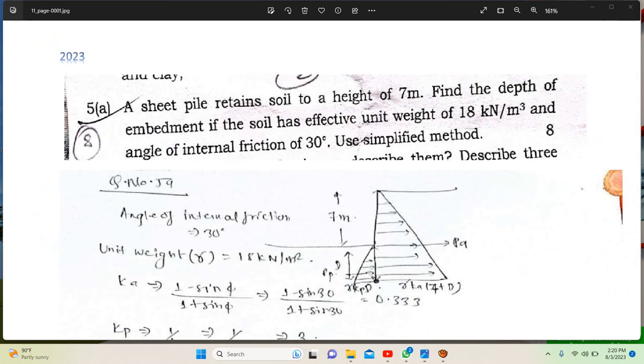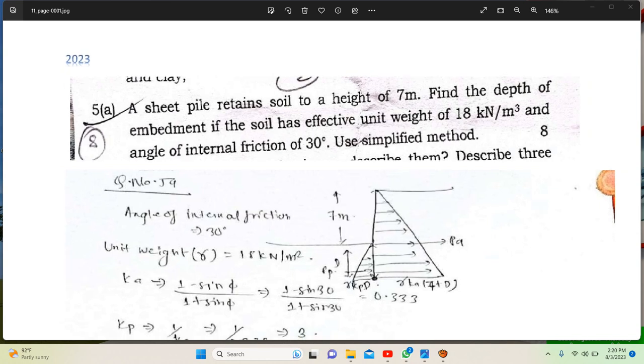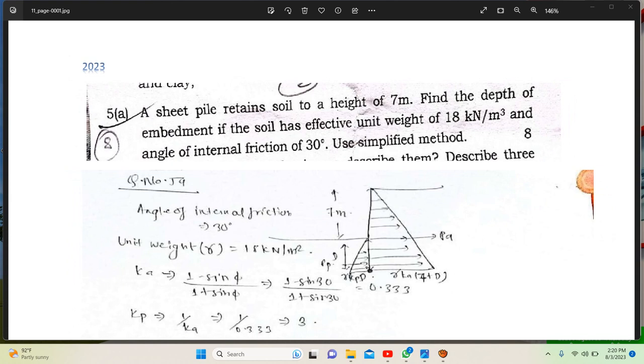A sheet pile retains soil to a height of 7 meters. Find the depth of embedment if the soil has effective unit weight of 18 kilonewton per meter cubed and angle of internal friction of 30 degrees. We can do this using simplified method.